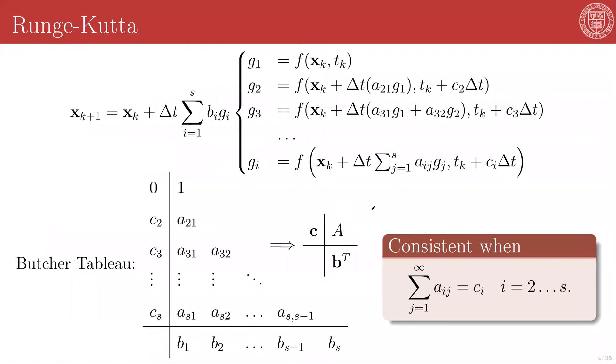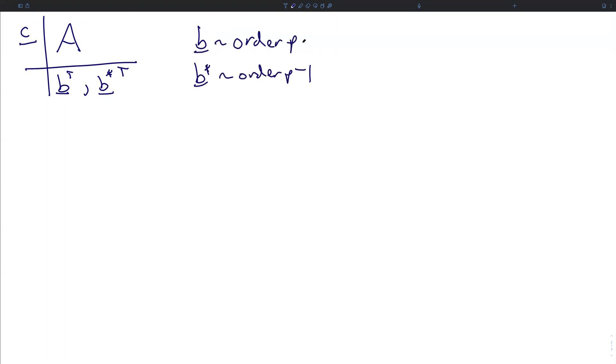A very common modification to Runge-Kutta methods is something called adaptive Runge-Kutta. In this case, we estimate the local truncation error by using two different Runge-Kutta methods. And we define a Butcher tableau that looks like, for a single matrix A and a single vector c, we define two different B vectors, b and b*.